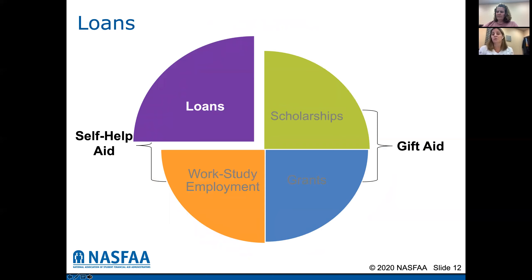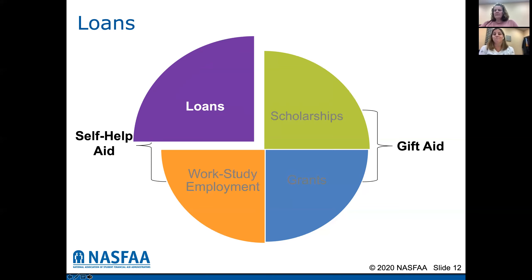And loans. Loans come in three forms. There are two student loans: the subsidized loan and the unsubsidized loan. With the subsidized loan, the government pays the interest while you're going to school. With the unsubsidized loan, the interest accrues — or you can pay the interest quarterly if you choose — but that loan will grow as you're in school. Then there are Parent PLUS loans, which allow the parent to borrow money to help cover the cost of education. The loans can be deferred until the student is out of college. There is a credit check for the Parent PLUS loan.